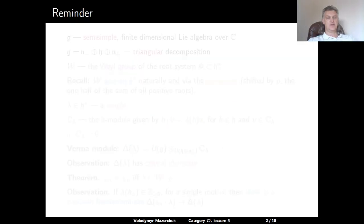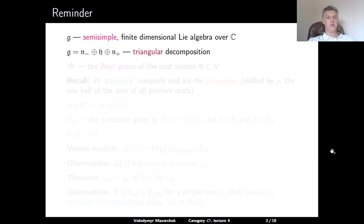Let's start with briefly recalling the setup of the previous lectures. We work with a semi-simple finite dimensional complex Lie algebra G, with a fixed triangular decomposition G = N⁻ ⊕ H ⊕ N⁺.